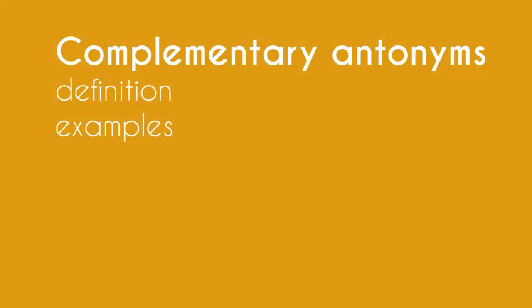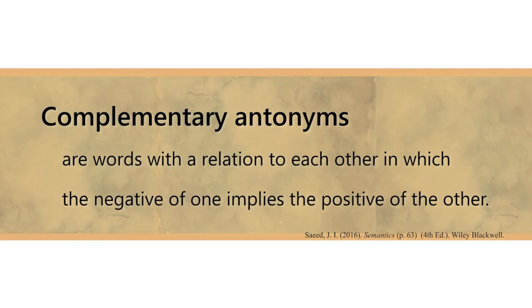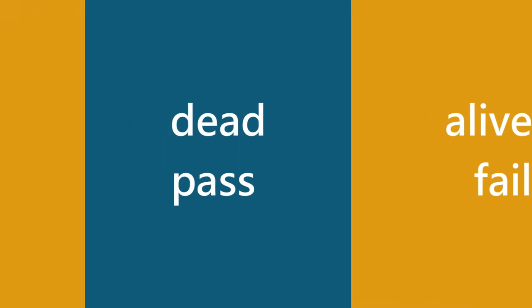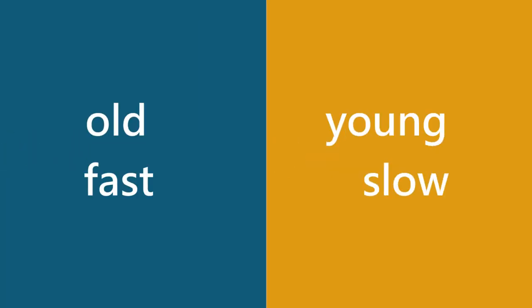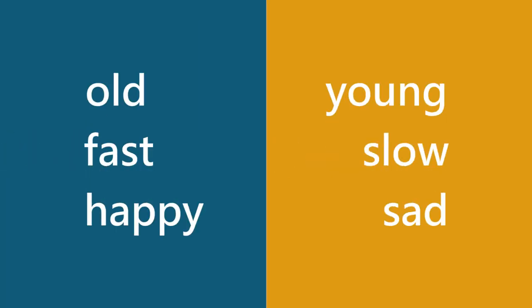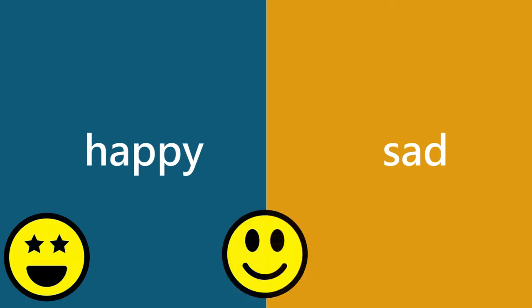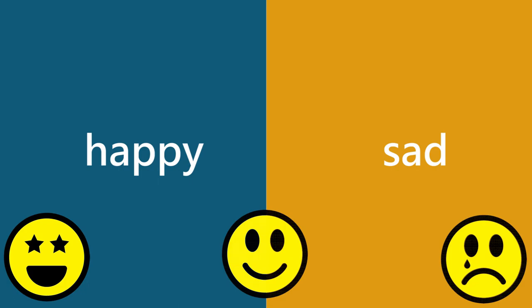It's complementary antonyms. Complementary antonyms are words in which the negative of one implies the positive of the other — like dead or alive. The negative of dead is the positive of alive. But words like young and old, fast and slow, happy and sad — they're not complementary opposites. If I ask, 'Are you happy today?' you may not necessarily be happy, but it doesn't mean that you're sad. If you're not happy, you're not necessarily sad.